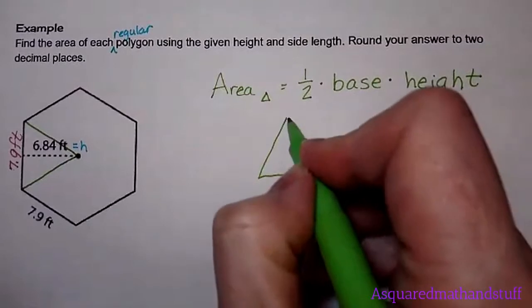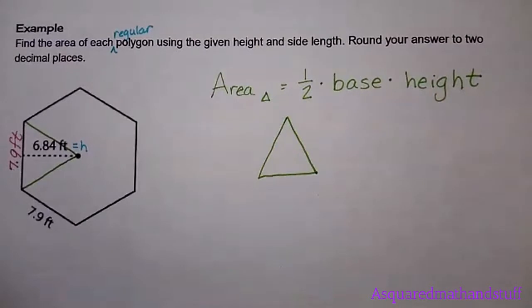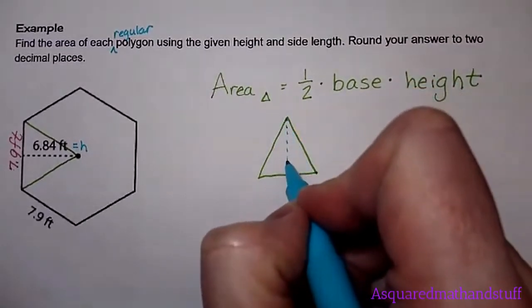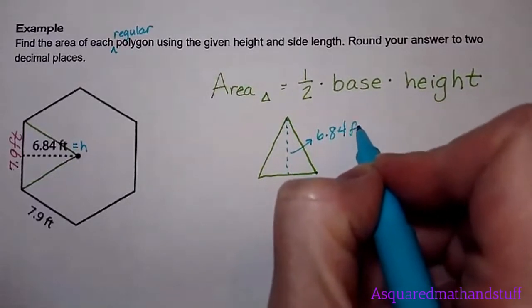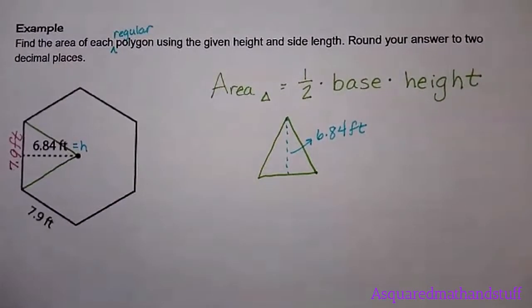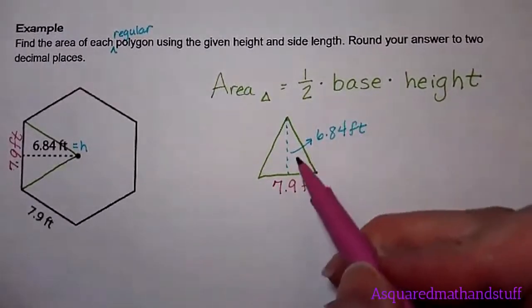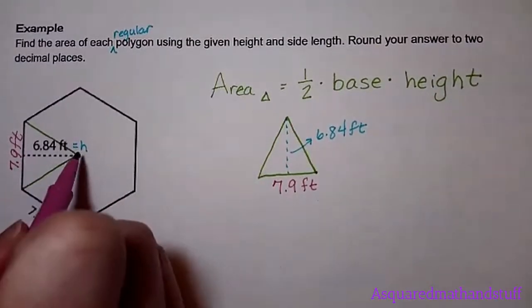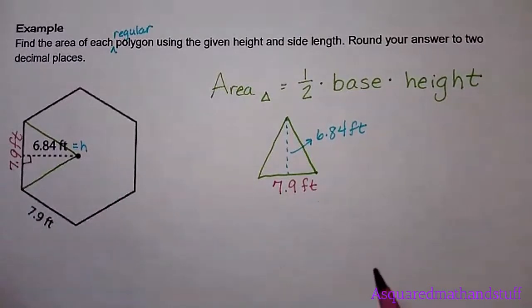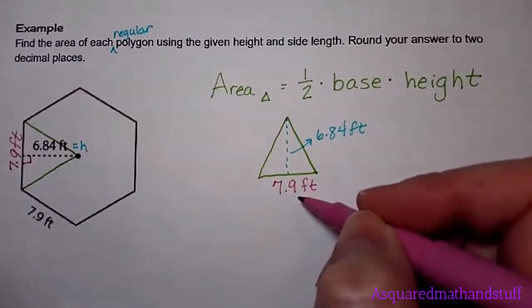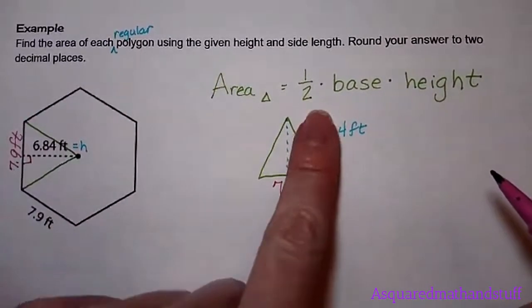The height here, the 6.84, is here, so that is 6.84 feet, and our base is our 7.9 feet. I know this is the height because it's not marked here, but this is going to be a 90-degree angle. It's going to end up being a perpendicular bisector to that side length of this hexagon.